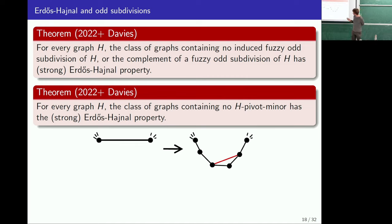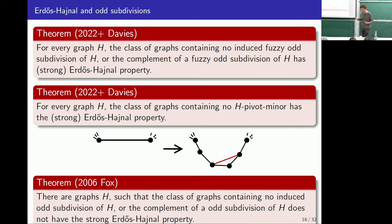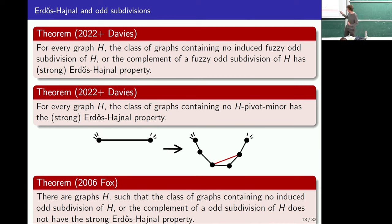We have this result for fuzzy odd subdivisions, and something that at first looks like a shortcut is that this generalises the theorem for regular subdivisions. But the fuzzy odd subdivision is actually necessary — it would be very nice to just have a theorem on forbidding odd subdivisions and their complements, but that turns out to be false. If you only forbid odd subdivisions and their complements, you don't have the Strong EH property anymore. So this weird fuzzy odd subdivision is really a necessary condition for this to work.